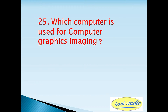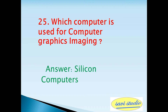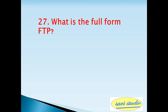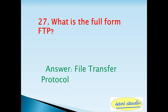Twenty-fifth question: which computer is used for computer graphics imaging? Answer: silicon computers. Twenty-sixth question: which bar is usually located between the title bar in MS Word that provides categorized options? Answer: menu bar. Twenty-seventh question: what is the full form of FTP? Answer: File Transfer Protocol.